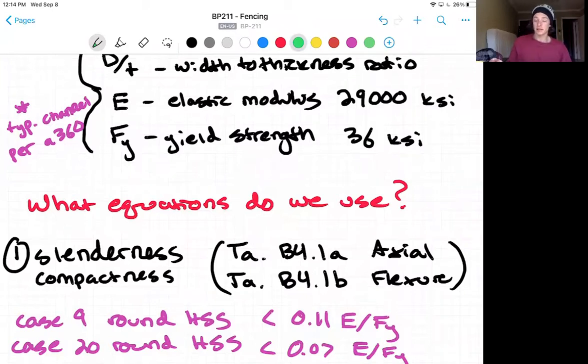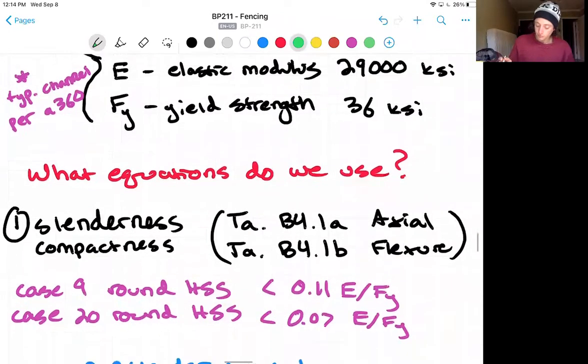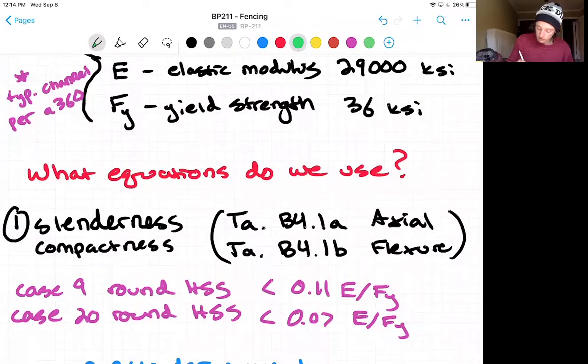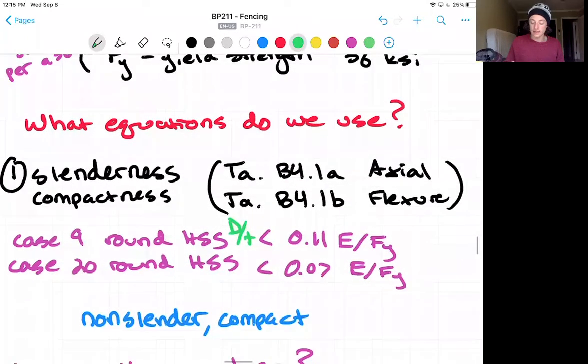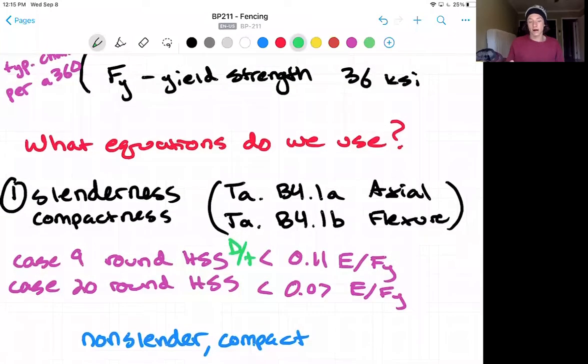I'm going to check that the width to thickness ratio is less than these two conditions, or we'll find that the width to thickness ratio is less than these two conditions, which makes it a non-slender compact section.